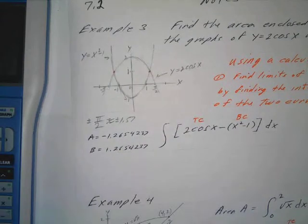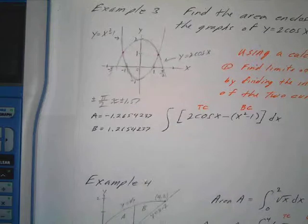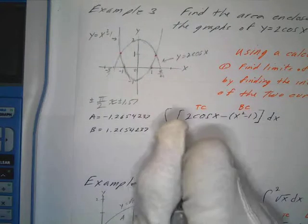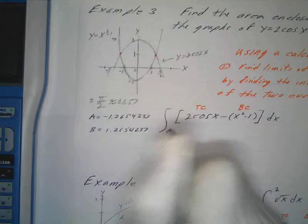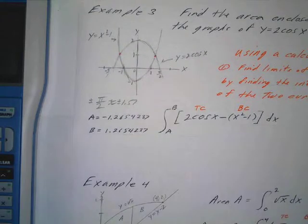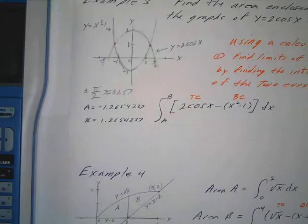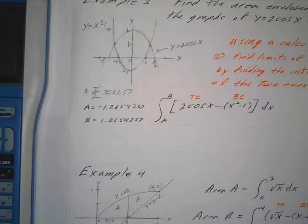And then once you write that down, then they know that's what you mean. So then you could just write - you don't have to write that up here on your limits, you can just write a to b. And now you've got that. Okay, now we can do the rest with a calculator. This is obviously a calculator problem.